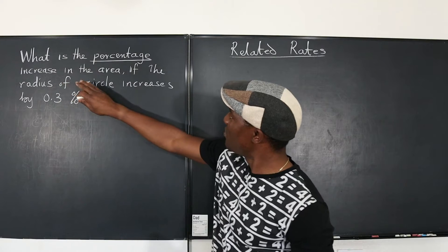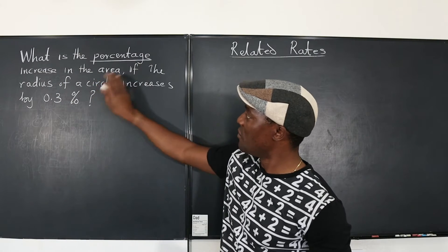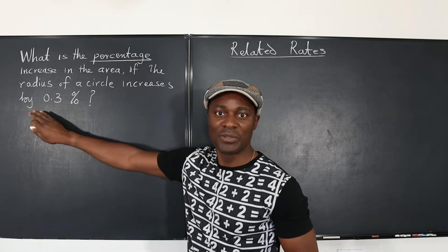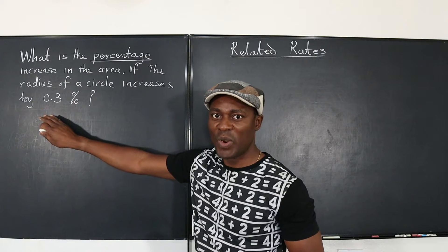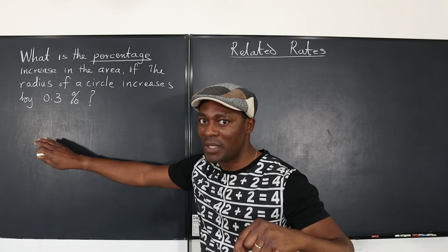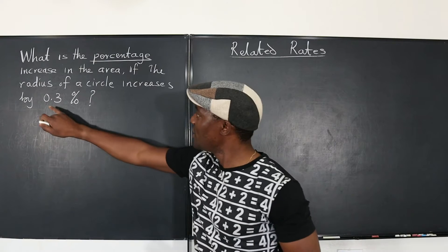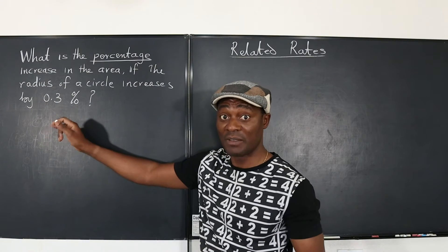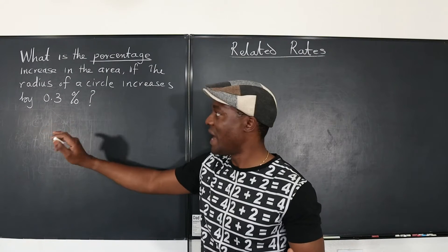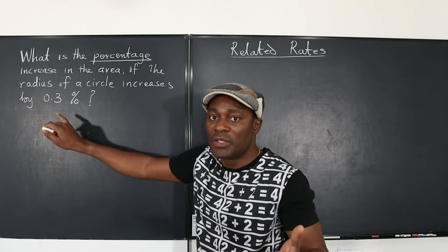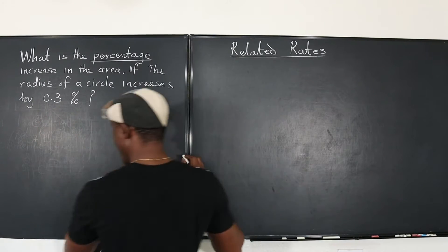If you look at this, what would be the percentage increase in the area if the radius increases by 0.3 percent? Well, it depends on what the original radius was, which we don't know. But we know the 0.3 percent could be written as a fraction or as a decimal 0.003.